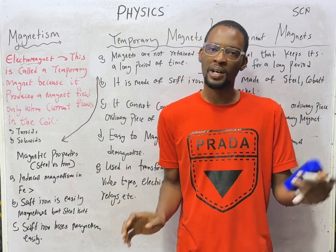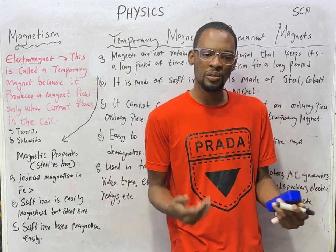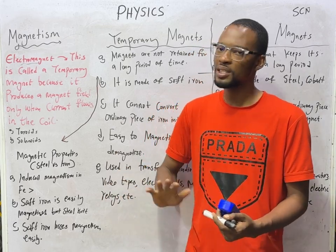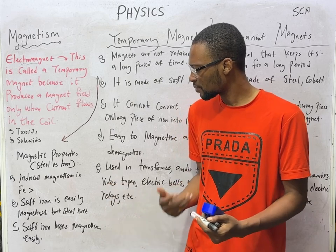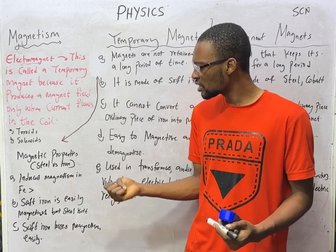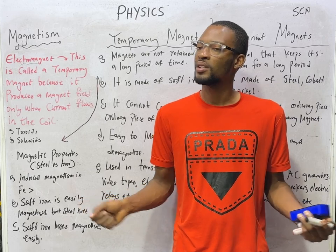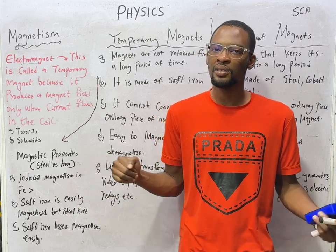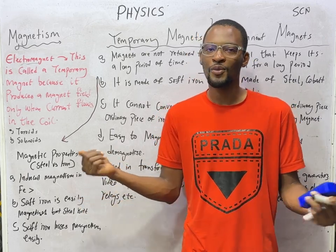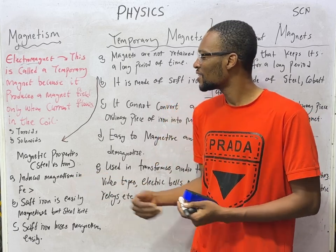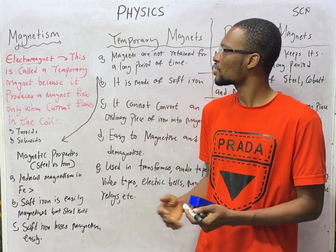Comparing magnetism in steel and iron: soft iron can be easily magnetized, but steel cannot be easily magnetized. Soft iron loses magnetism easily, but steel retains magnetism for a very long period of time. This is a quick comparison of the magnetic properties of steel versus iron.